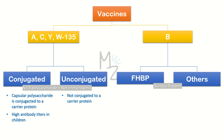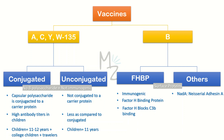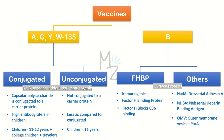The conjugated vaccine has capsular polysaccharide conjugated to a carrier protein, while the unconjugated vaccine has no such conjugation. Conjugated vaccines produce high antibody titers in children, whereas unconjugated vaccines do not. Children aged 11–12 years and travelers are recommended to receive conjugated vaccines, while unconjugated vaccine is recommended for children around 11 years of age. Factor H binding protein (FHBP) is immunogenic and blocks C3b binding. Other surface antigens include NadA (Neisseria adhesin A), NHBA (Neisseria heparin binding antigen), and OMV (outer membrane vesicle).